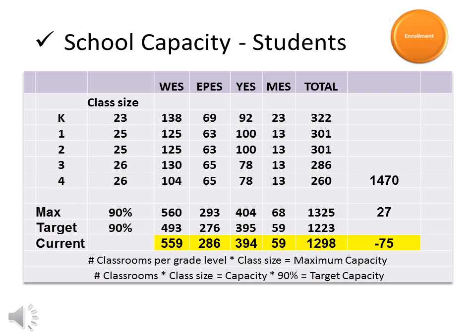The district facility study calculated the capacity for each of our school buildings. Elementary capacity was determined by taking the total number of homerooms times the class size. For example, Windsor Elementary has six available classrooms for kindergarten. Using a class size of 23, the capacity would be 138 students. The total elementary capacity is currently 1,470 students using the class sizes in the table. Capacity would be reduced by lowering the class size numbers, and more spaces would be needed. You can refer to the facility study for further explanation of the district's current capacity.